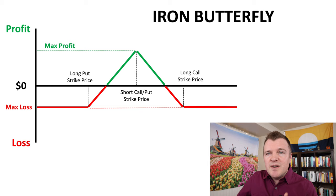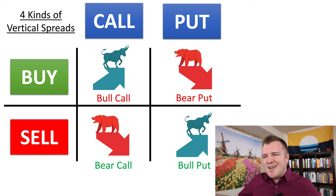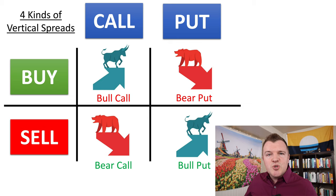By the end of this video you will completely understand this profit and loss diagram. The iron butterfly is just a bear call credit spread and a bull put credit spread put together, sharing the same strike price for your short leg. We sell credit spreads to collect premium — if the share price trades perfectly sideways you're making money by the value of contracts slowly wasting away over time. This is theta decay.